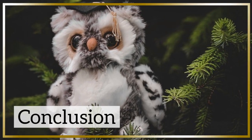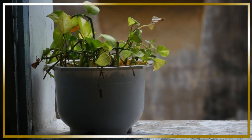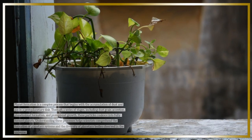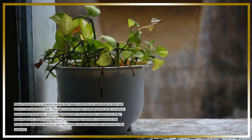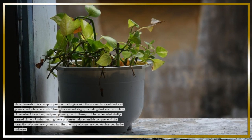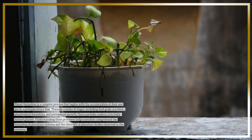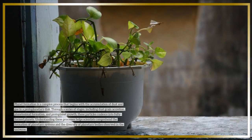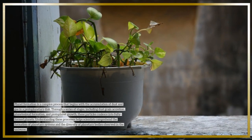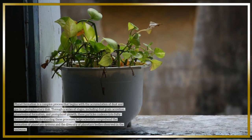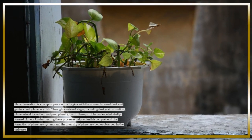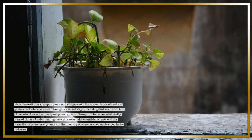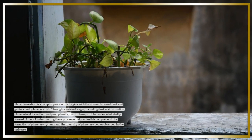Conclusion. Planet formation is a complex process that begins with the accumulation of dust and gas in a protoplanetary disk. Through a series of stages, including dust-grain accretion, planetesimal formation, and protoplanet growth, these particles coalesce into fully formed planets. Understanding these processes helps scientists comprehend the formation of planetary systems and the diversity of planetary bodies observed in the universe.